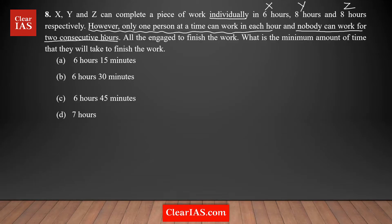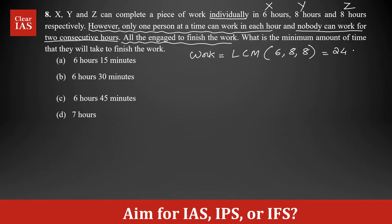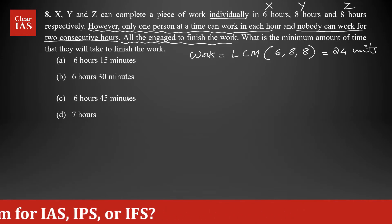When solving these questions, always follow the conditions given: nobody can work for two continuous hours, and all three must be engaged to finish the work — you cannot avoid anyone. We need to find the minimum amount of time they will take to finish. The first step is to assume a value for total work using the LCM approach. Since individual times are six, eight, and eight hours, the LCM is 24 units — so total work is assumed to be 24 units.